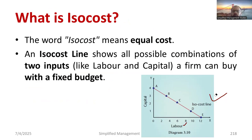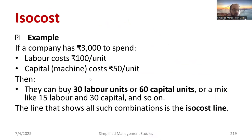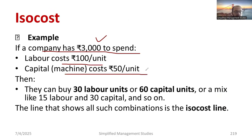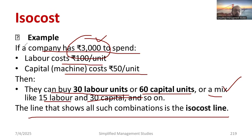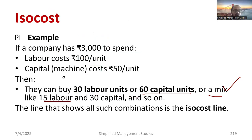That is the basic concept of ISO cost curve in managerial economics. It is very important for economic situations where we have a fixed budget and adjust the parameters. For example, a company has 3000 to spend. Labor cost is 100 per unit and capital or machine cost is 50 per unit. They can buy 30 labor units or 60 capital units, or a mix like 15 labors and 30 capital — all meeting the fixed budget. The line shows all such combinations.